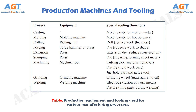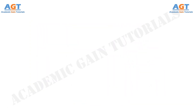The type of tooling depends on the type of manufacturing process. In this table, we list examples of special tooling used in various operations. We will learn about them in detail in the next chapters when we discuss these processes. So, we have studied in detail about production machines and tooling. Thank you.